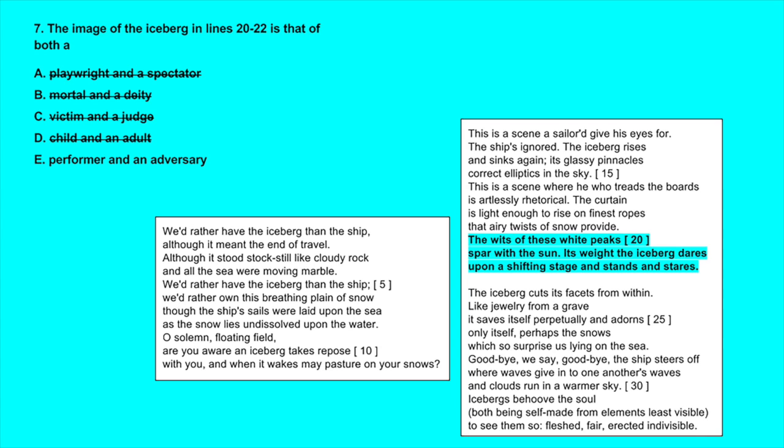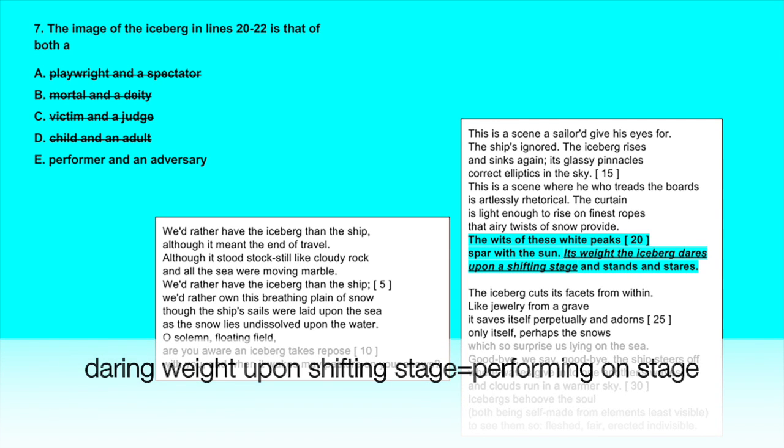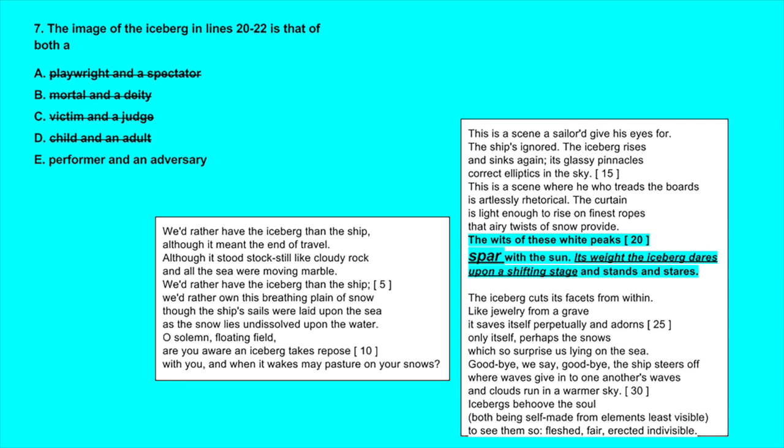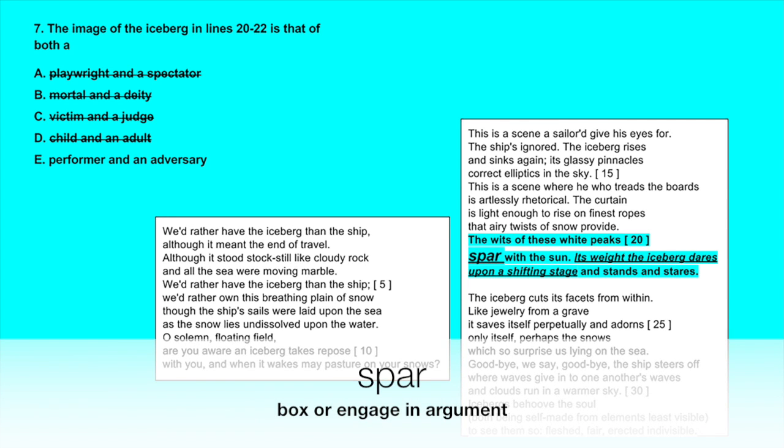E, a performer and an adversary - we do have the iceberg daring its weight upon a shifting stage, so we can say that this image is that of a performer, and we have the iceberg sparring with the sun, or the white peaks of the iceberg sparring with the sun. So sparring is a term that can refer to boxing or engaging in an argument, and these are activities that you might do with an adversary or an enemy or opponent.